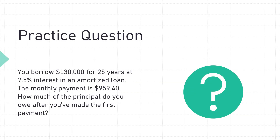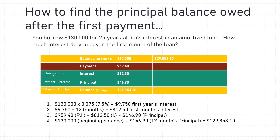The next question is how much principal do you owe after the first payment? The monthly payment is $959.40 and the first month's interest is $812.50. Subtracting, we find $146.90 was applied to the loan balance this month, leaving a final loan balance of $129,853.10 after the first month's payment. This number becomes the top slice of bread — the beginning balance — for the next month, and the same process continues.